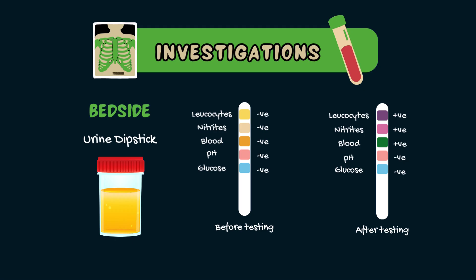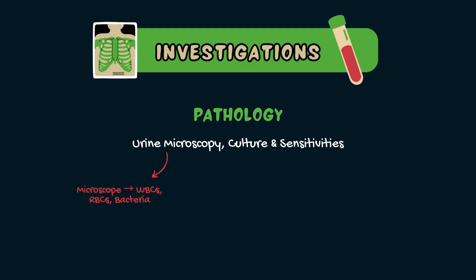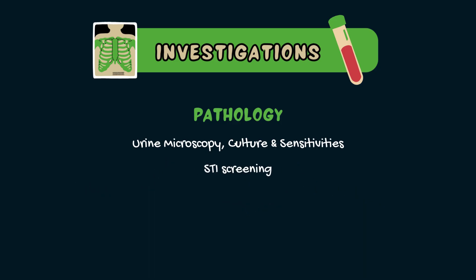In patients who are negative for nitrites but in whom you have a strong clinical suspicion for a UTI, it is important to send the urine to the lab for further testing — microscopy, culture, and sensitivity. Microscopy involves looking at the urine sediment for white blood cells, red blood cells, bacteria, and epithelial cells. Culture looks for significant growth of a single organism, and sensitivity testing involves exposing that organism to various antibiotics to guide treatment. It is also important to consider STI testing, as symptoms can often overlap with UTIs. For people with recurrent UTIs, imaging of the urinary system — either ultrasound or a CT scan of the kidneys, ureters, and bladder — should be performed to ensure no anatomical abnormalities are present.